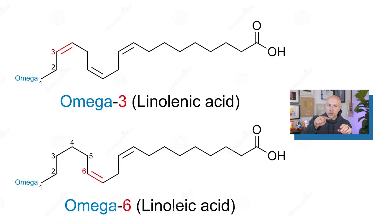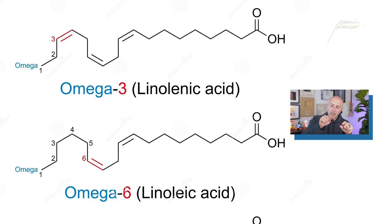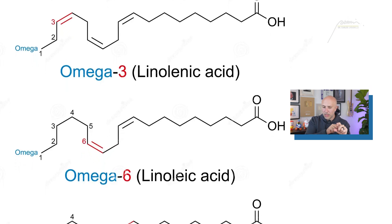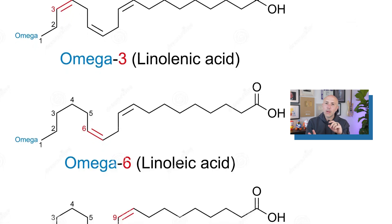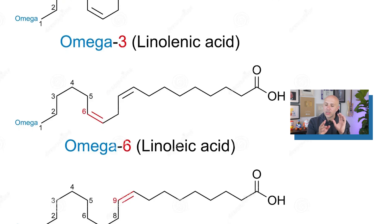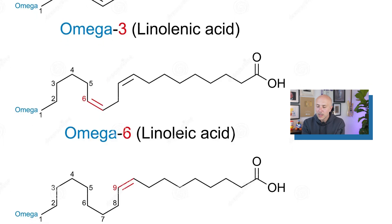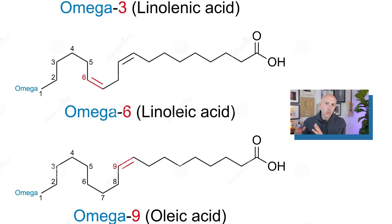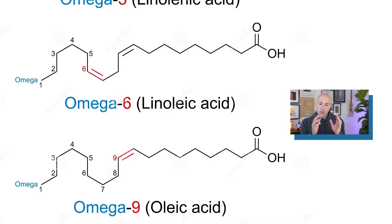When you look at omegas as a chain, every time the line bends, where you see the first double bond, that is where you call the omega position. If that first double bond is at position three, it's omega-3. If it's at position six, it's omega-6, and so forth. So a polyunsaturated fatty acid with a double bond at position three is omega-3.